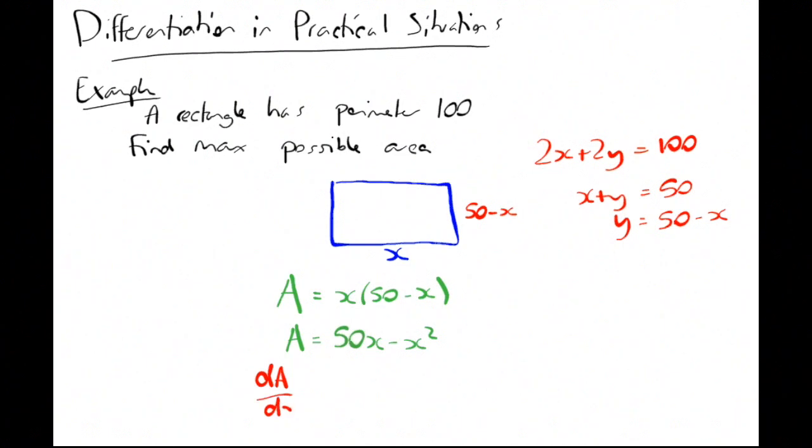If we differentiate it, we get dA/dx = 50 - 2x. Set it equals zero at a stationary point. That tells us straight away that x is 25.